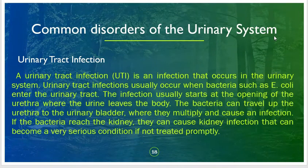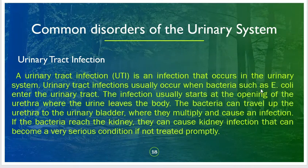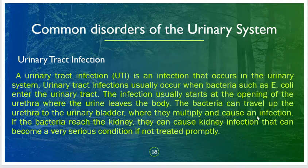Common disorders of the urinary system include urinary tract infection (UTI). UTIs occur when bacteria such as E. coli enter the urinary tract. The infection usually starts at the opening of the urethra where urine leaves the body. Bacteria can travel up the urethra to the urinary bladder, where they multiply and cause infection. If the bacteria reach the kidneys, it can become a very serious condition if not treated promptly.